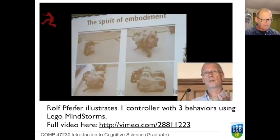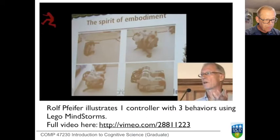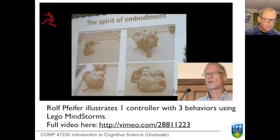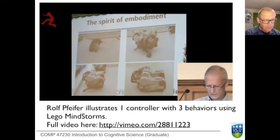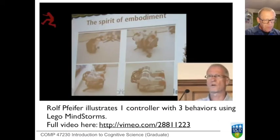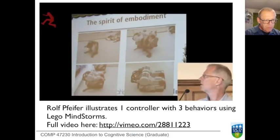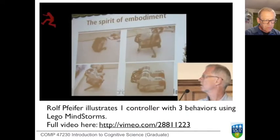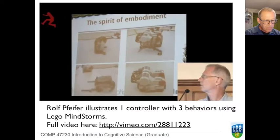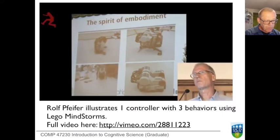I'm going to show you a few behaviors. Whenever you observe a particular behavior, the question arises as to what the underlying mechanisms are that bring this behavior about. Here's one that I like very much — we call him crazy bird. The question is now: what are the mechanisms, or what is the control, that's actually underlying the behavior of these creatures?